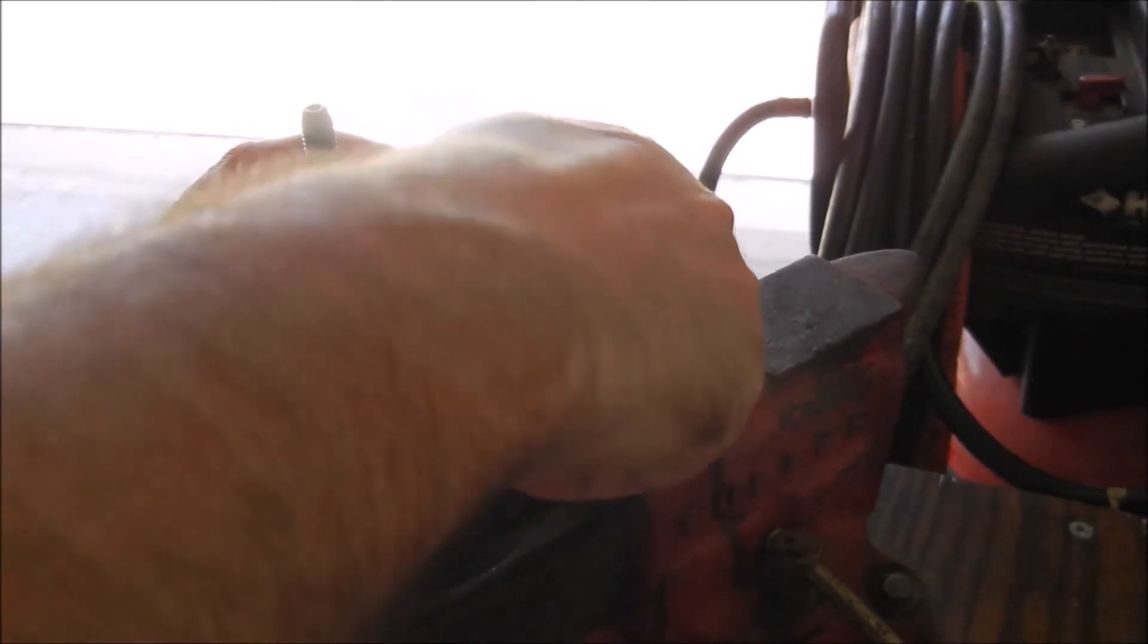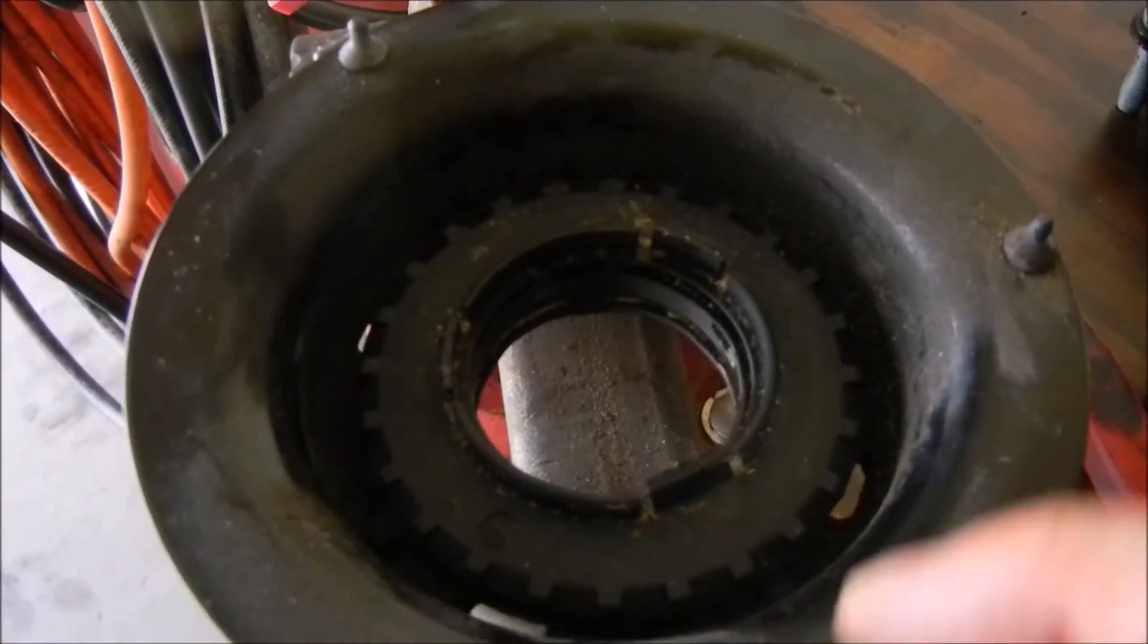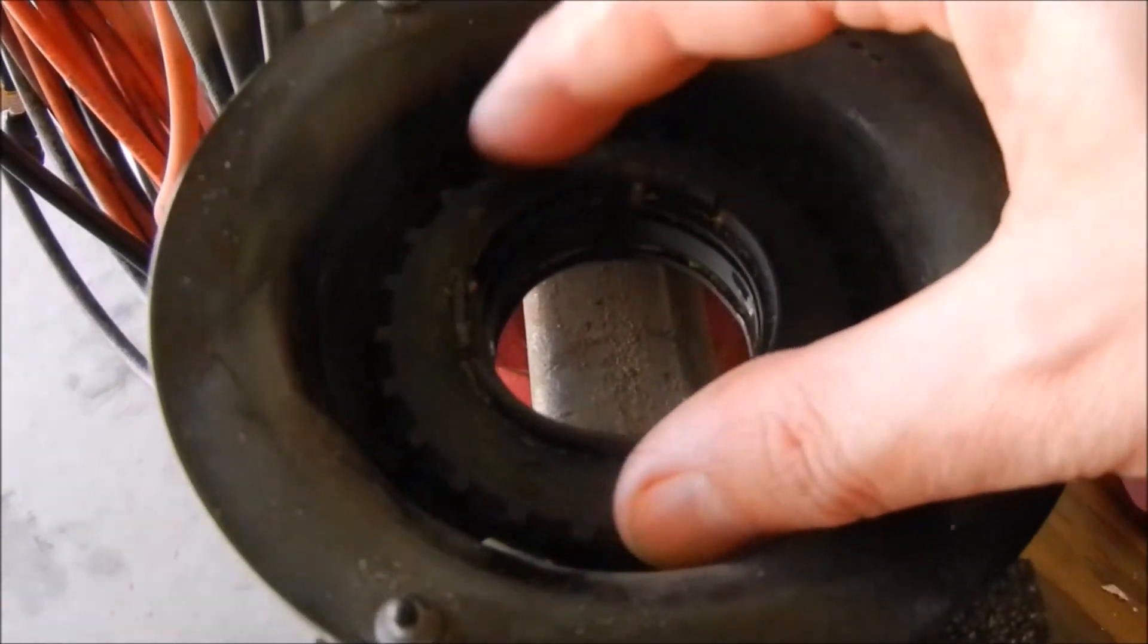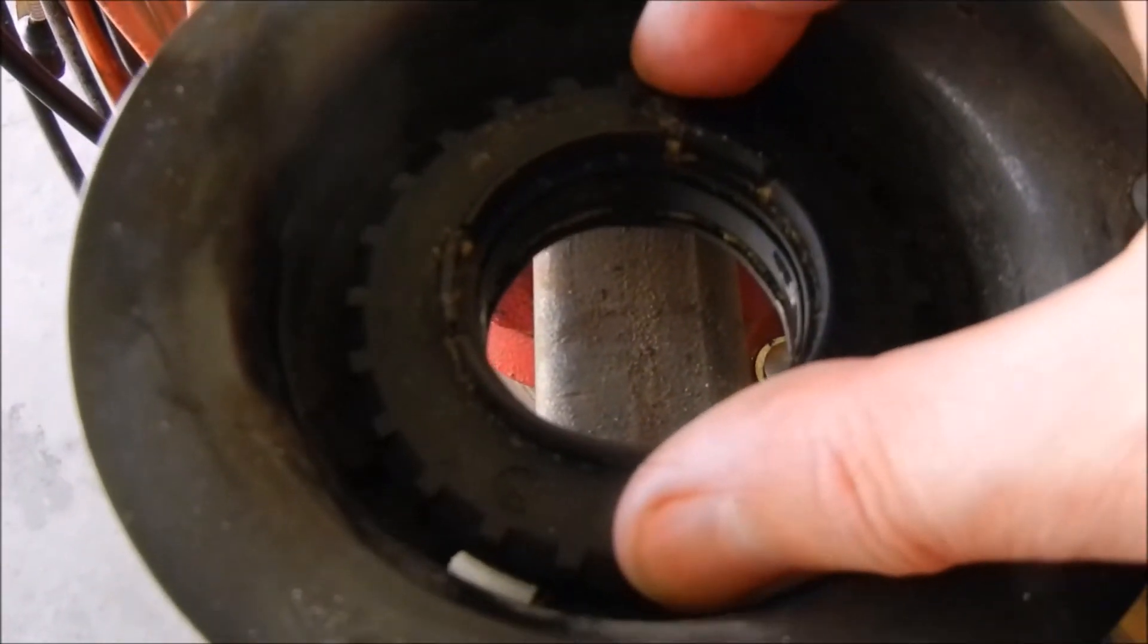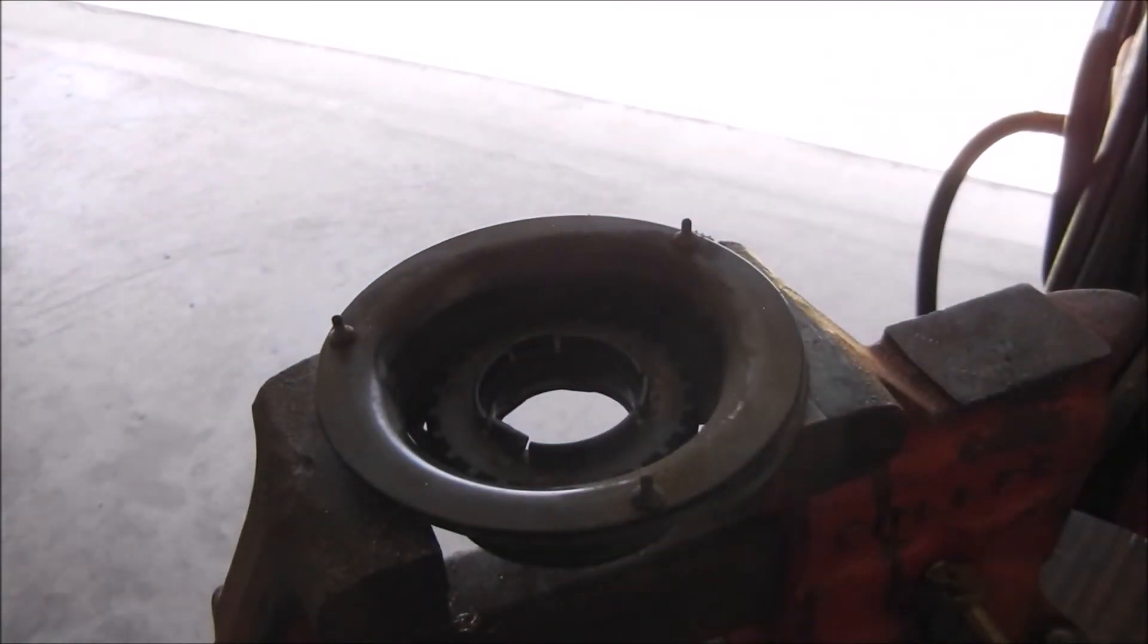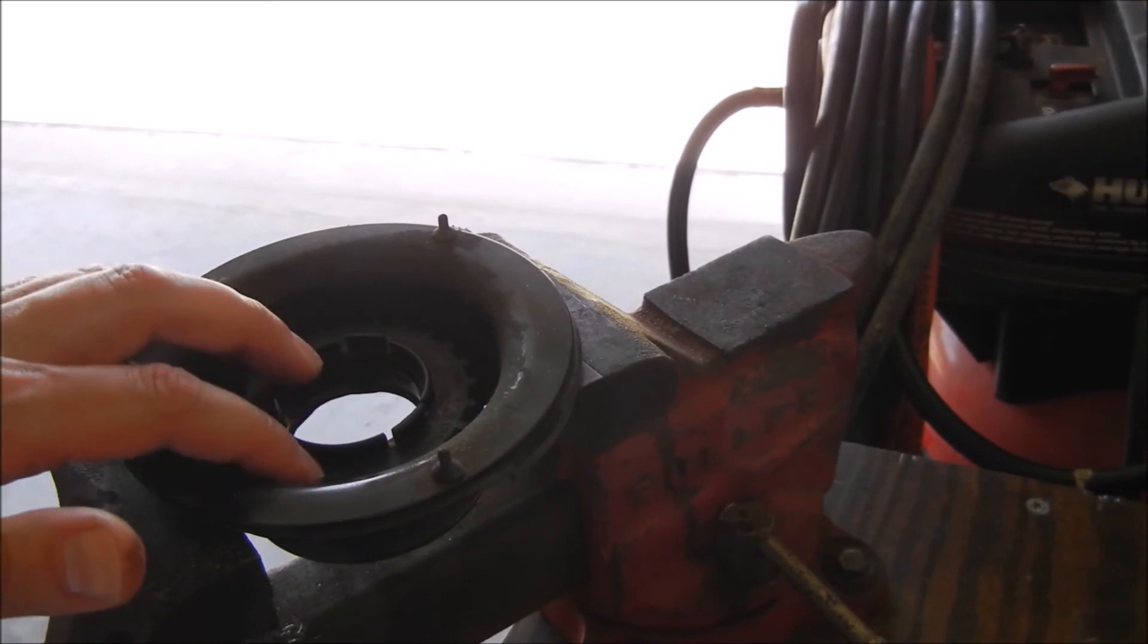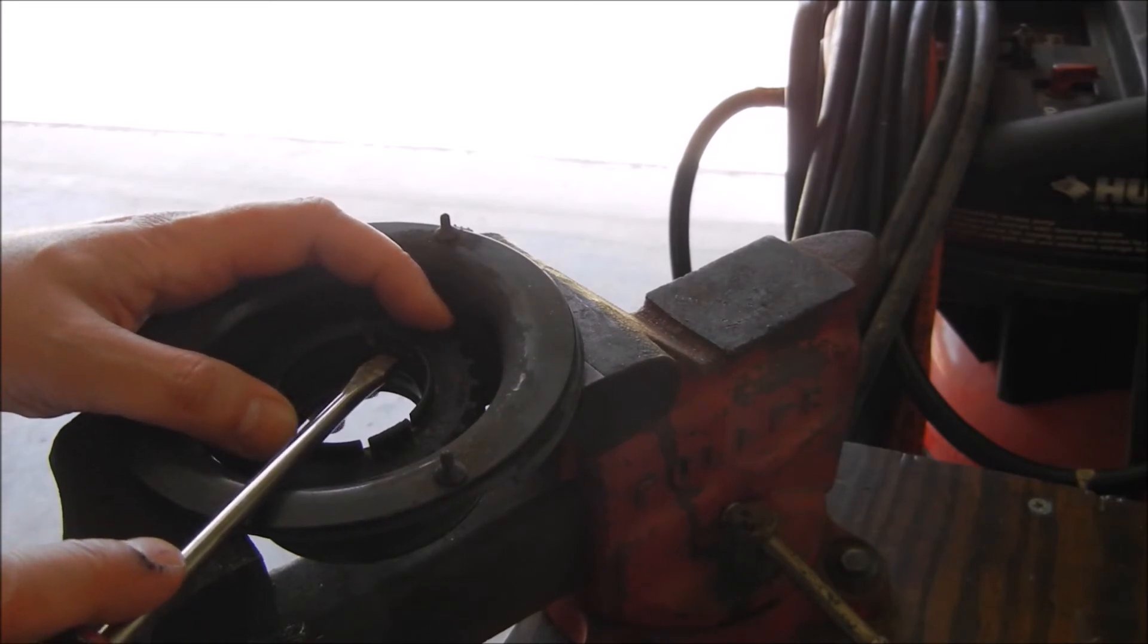So you can take this apart. And this is the actual bearing. Look at all that play. And that is how a strut bearing can go bad. And this is made out of, I would just call it plastic, it's probably composite. I was a little surprised that there wasn't a little bit tougher bearing in there.